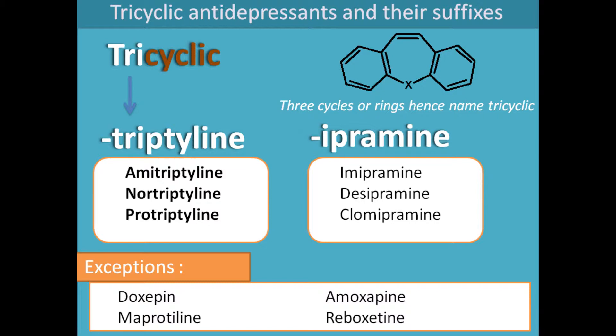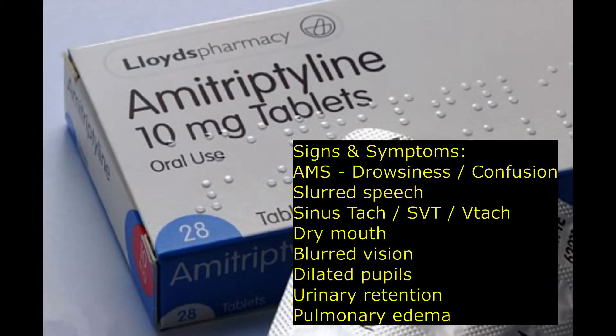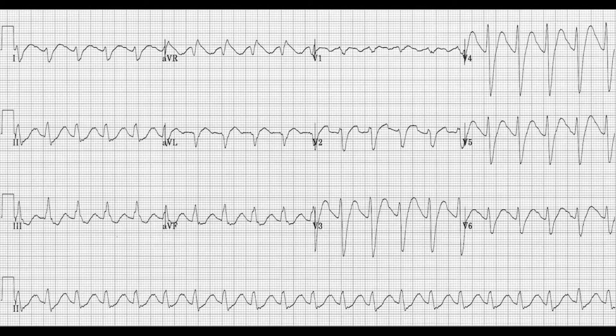Signs and symptoms of TCA overdose vary dramatically by patient. Some will have fatal dysrhythmias; more common signs include altered mental status such as drowsiness, confusion, and slurred speech. Those dysrhythmias can lead to sinus tachycardia or even SVT. The patient may also have dry mouth, blurred vision, dilated pupils, urinary retention, constipation, and possibly pulmonary edema.